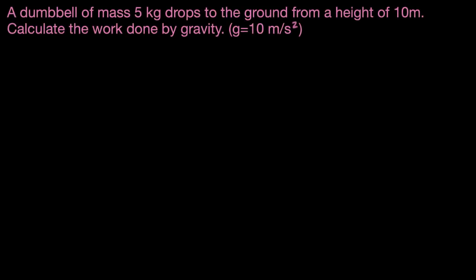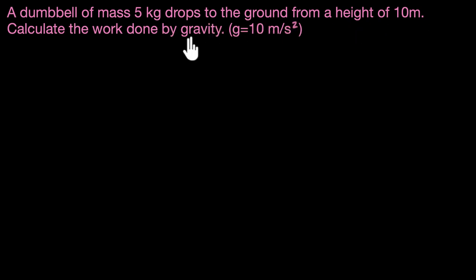Let's calculate work done when things are dropped or lifted. We'll solve two problems on this. Here's the first one: a dumbbell of mass five kilograms drops to the ground from a height of 10 meters. Calculate the work done by gravity. We're given g is 10 meters per second squared.